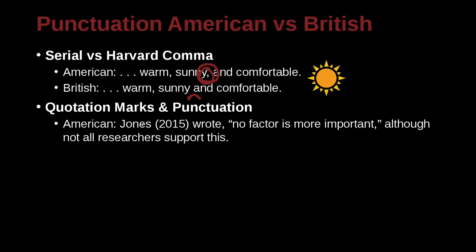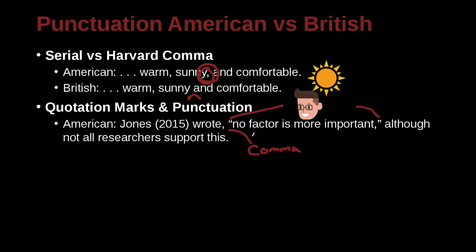Question marks and punctuation. Here's an example: Jones 2015 wrote, "no factor is more important," although not all researchers support this. Let's take a moment to look at this example because it's an excellent example — it's a little bit confusing. First of all, we have a quotation here, with quotation marks at the start and end. This is a quote from a researcher, and we cite the researcher here — Jones 2015 — and we say what that person wrote. So we're okay citation-wise; we're not plagiarizing. You can note that we have a comma here, which begins just before the quotation, separating our introductory clause — which is 'Jones wrote.'